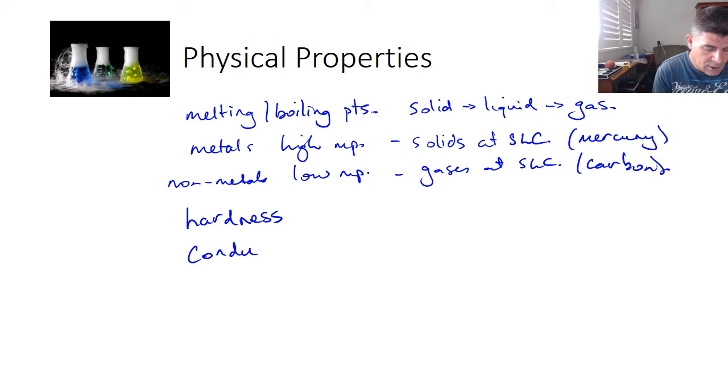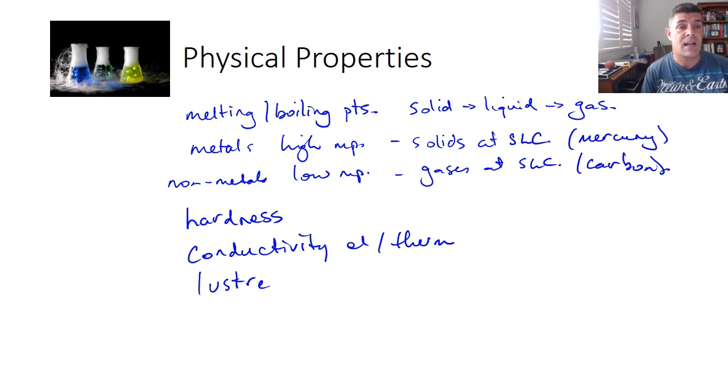Hardness, conductivity, both electrical and thermal, things like lustre or appearance, colour, those sorts of things. These are all physical properties and they help us to distinguish the metals from the non-metals. We'll look at chemical properties in the next video.